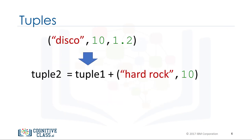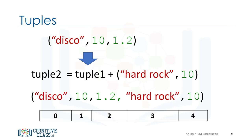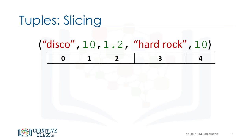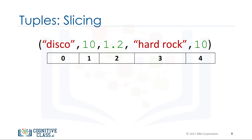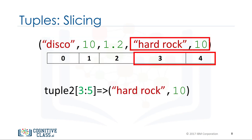We can concatenate or combine tuples by adding them. If we would like multiple elements from a tuple, we can also slice tuples. For example, if we want the first three elements, we use the following command — the last index is one larger than the index you want. Similarly, if we want the last two elements, we use the following command, and the last index is one larger than the length of the tuple.